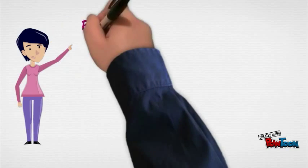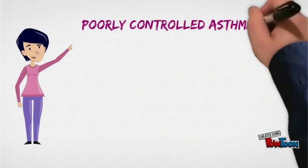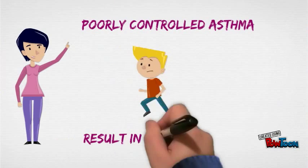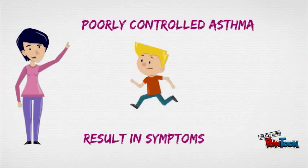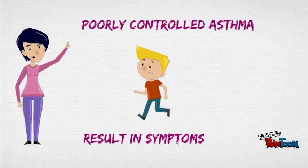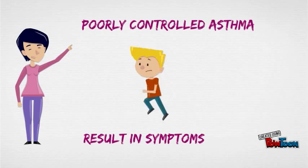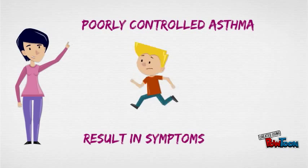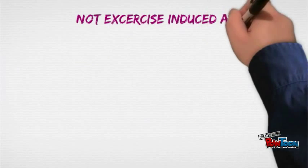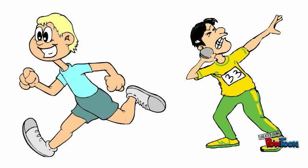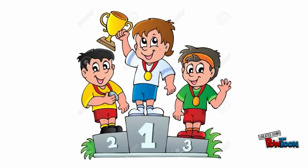If asthma is poorly controlled, exercise can lead to symptoms, which has been erroneously considered as exercise-induced asthma. In fact, the symptoms that appear during exercise are due to poor control of the disease and not because exercise causes asthma. Many Olympic athletes who have had childhood asthma are able to engage in physically demanding activities due to the rigorous control they have accomplished over the disease.